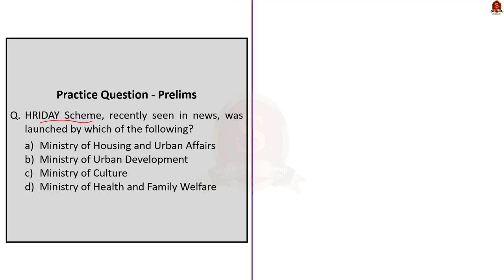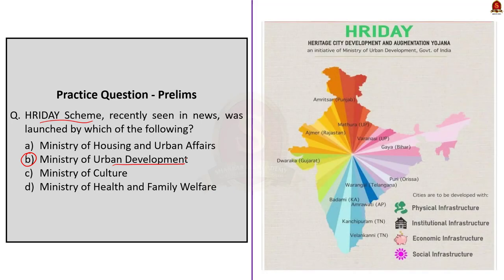This question is about the HRIDAY scheme, which was recently seen in news. The correct answer is option B — Ministry of Urban Development. The Ministry of Urban Development launched a scheme called HRIDAY to develop heritage cities in a holistic way. The scheme aims to preserve the unique character of heritage cities by creating accessible, informative, and secure environments. HRIDAY focuses on planning, developing, and implementing heritage-sensitive infrastructure, and aims to provide better services in the core areas of historic cities.